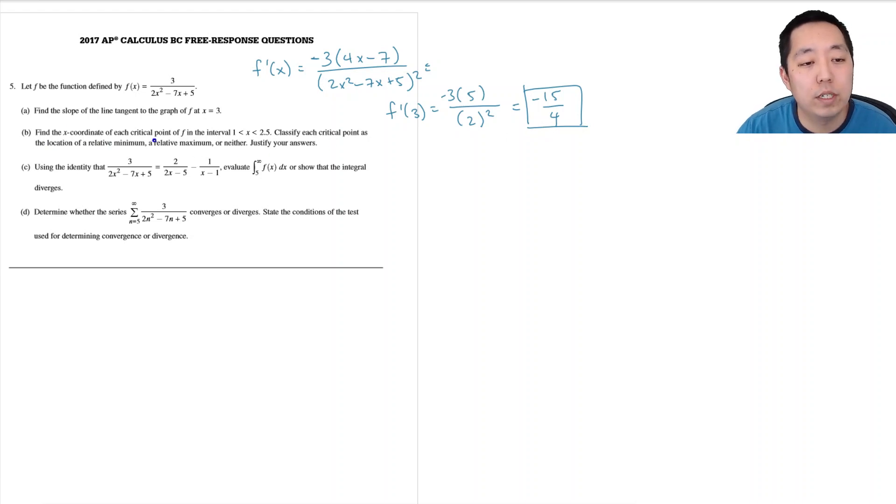Find the x-coordinate of each critical point on the interval 1 less than x less than 2.5. Classify each critical point as the location of relative min, relative max, or neither. And justify your answers.